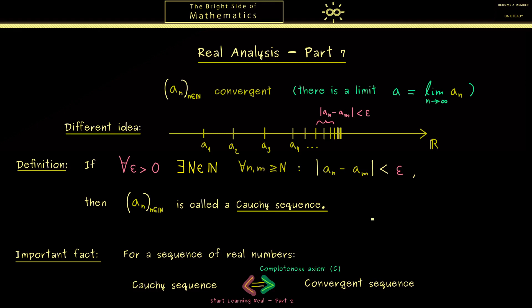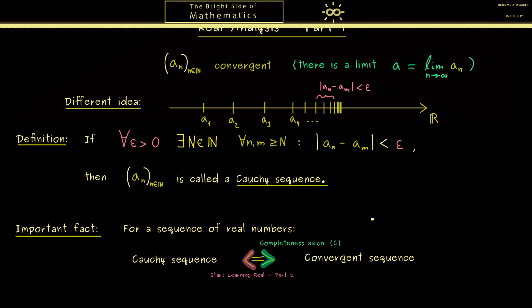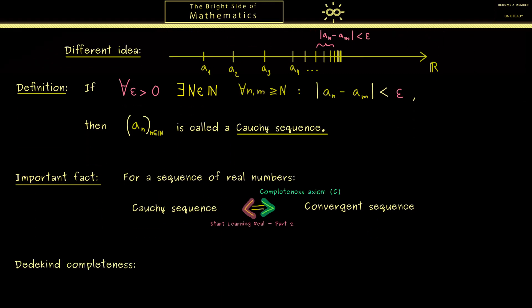However before we apply this in examples let's discuss another important property. It's called Dedekind completeness and a property for subsets of the real numbers. If M is such a set and also bounded from above then we know the supremum exists. So there is a least upper bound as a number in R.